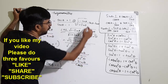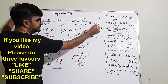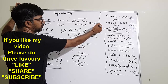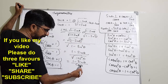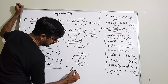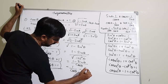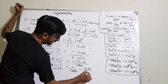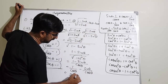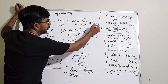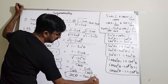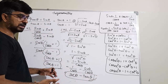Now distributing 1 minus sin θ upon cos θ, I get 1 by cos θ minus sin θ by cos θ. We know 1 by cos is sec θ and sin by cos is tan θ. So we directly get sec θ minus tan θ, which is the required answer. This is how we solve this type of question.